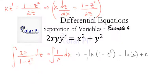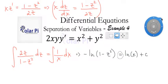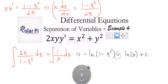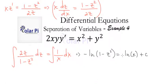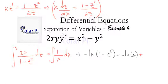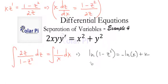Next we multiply both sides by negative one. We get ln|1 minus z²| on the left, and we rename negative C as k, so we have ln|1 minus z²| equals negative ln|x| plus k.